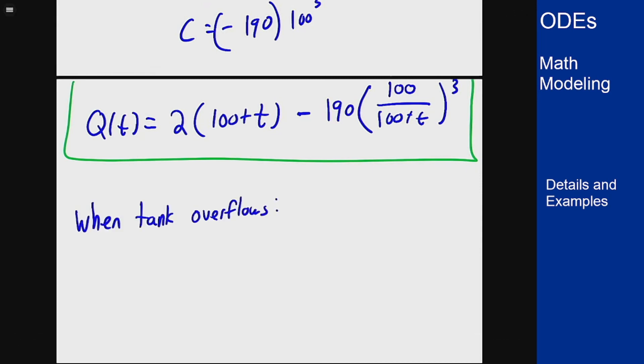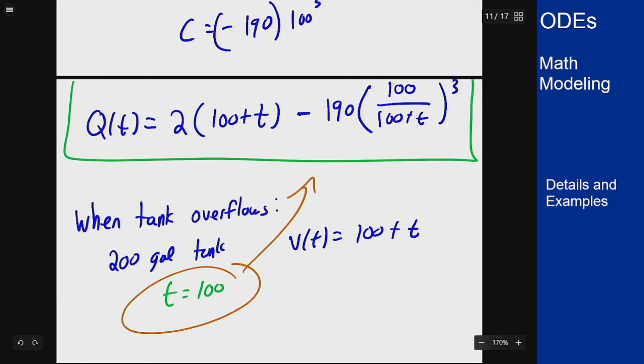The context: we start with a 200 gallon tank and my volume was 100 plus t. That means that after 100 minutes this is going to overflow. This overflow is at t equals 100, so now I can put that into the previous equation to find the amount of salt in the tank when it overflows.